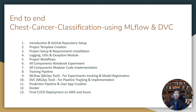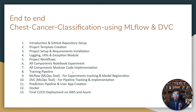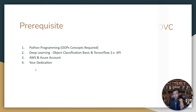So this is the entire project agenda. So many things we'll be covering in this project. Believe me, after this implementation, you can implement any kinds of deep learning or image classification project, and you can integrate MLOps and DVC tools with it. Now, regarding prerequisites: I'm expecting you're already familiar with Python programming and at least object-oriented programming, since we'll be writing everything as modular coding. You should also have understanding of deep learning, at least object classification, and knowledge of the TensorFlow 2.x API, because we'll be using Keras from TensorFlow.